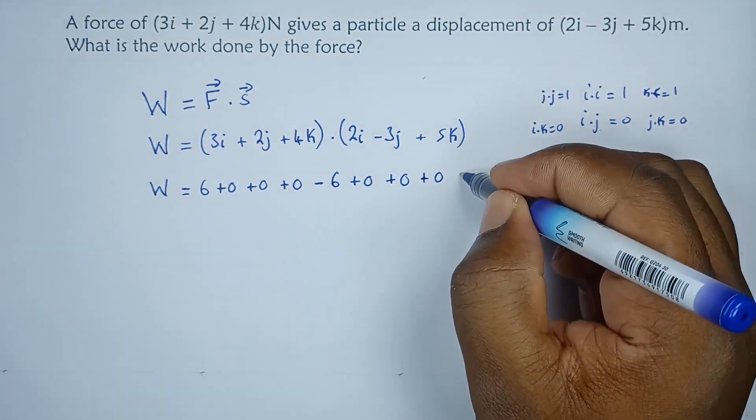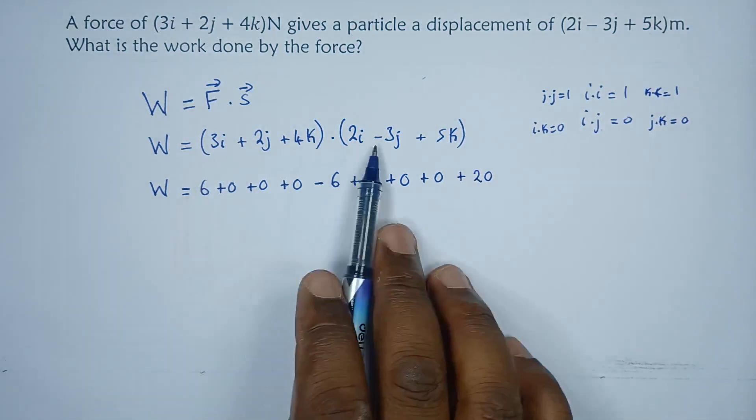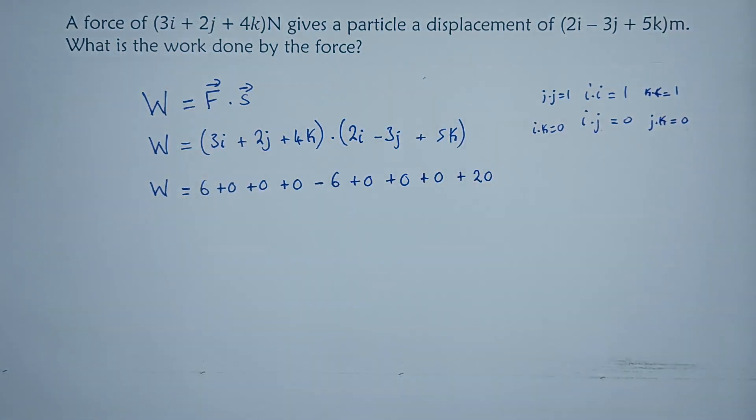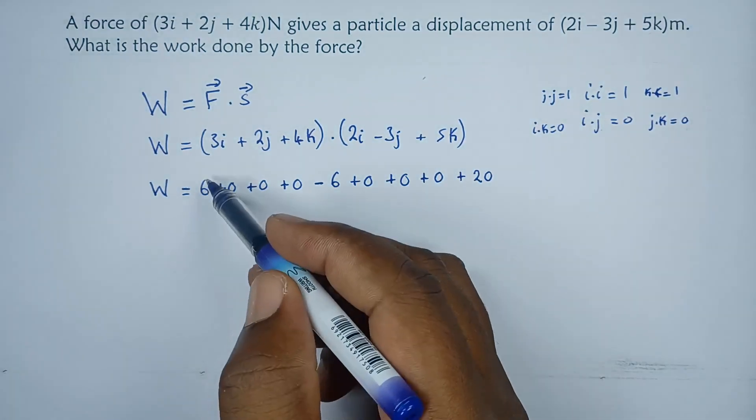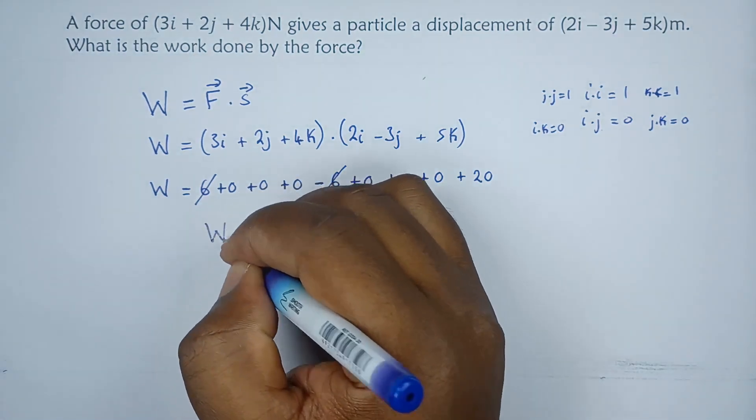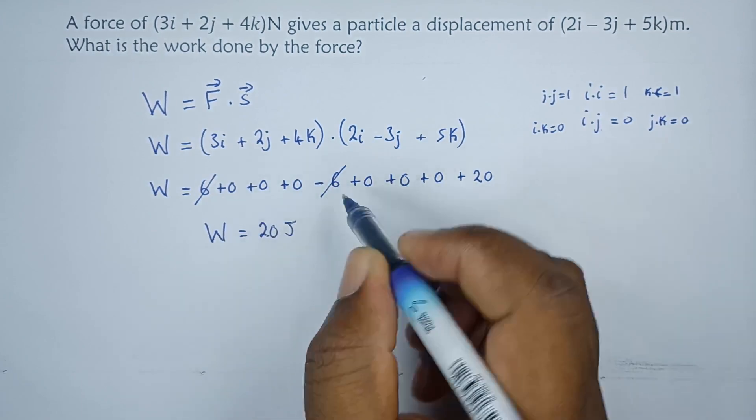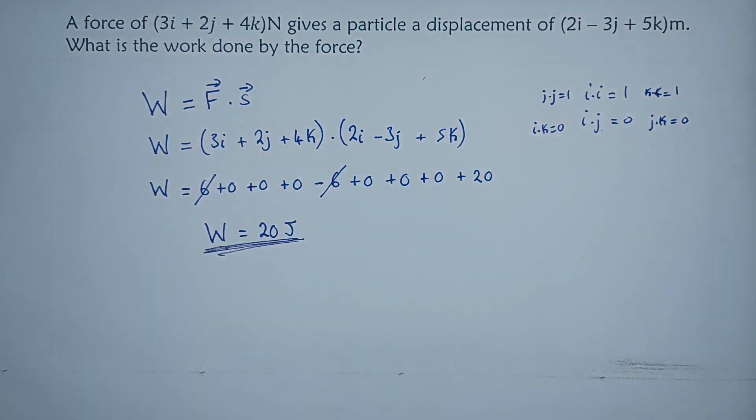Alternatively you can just go ahead and multiply what is corresponding because we know that we have zeros throughout. So this 6 and this negative 6 can cancel out, meaning that what we remain with is just the work done being 20 joules. So there we have it, that's how we find the work done for this particular question. Thank you.